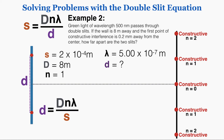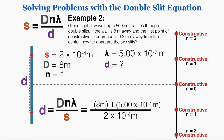I've rearranged the equation to solve for lowercase d instead of s. When I plug in the variables, I get a final answer of 0.02 meters. So that's how far the slits are from each other in this problem.